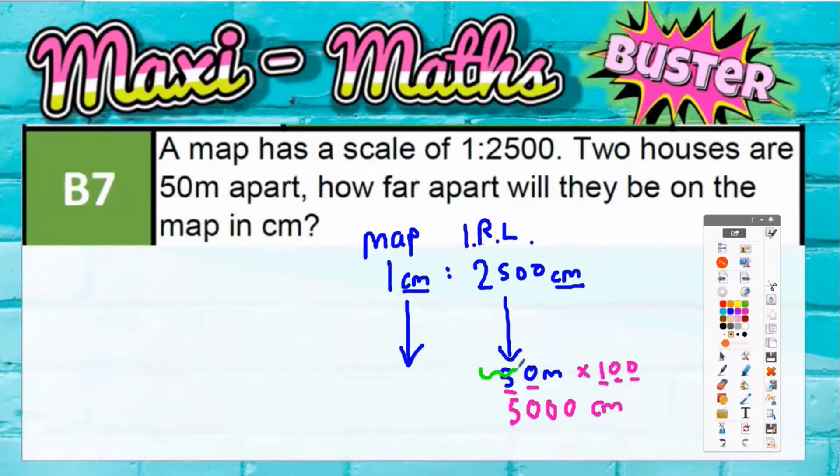And what you can do now is you can almost ignore the original 50 meters. You're going from 2,500 centimeters into 5,000 centimeters. So to get from 2,500 to 5,000 you are times-ing that by two.